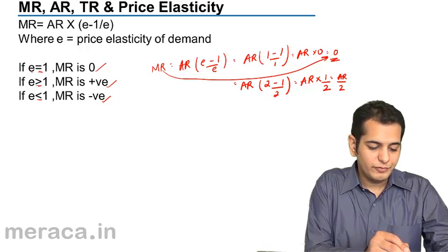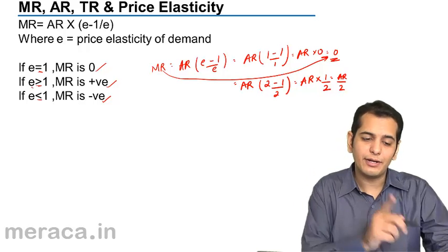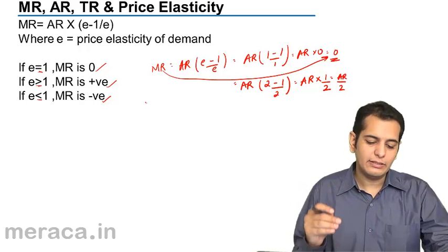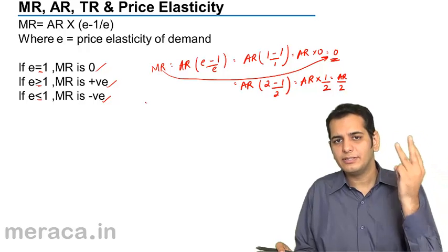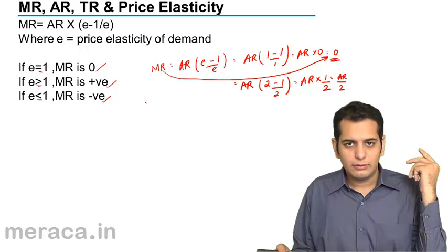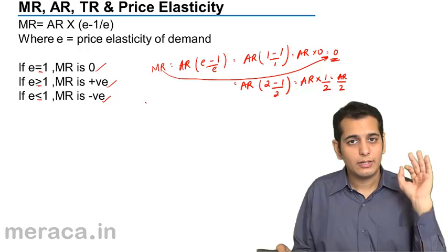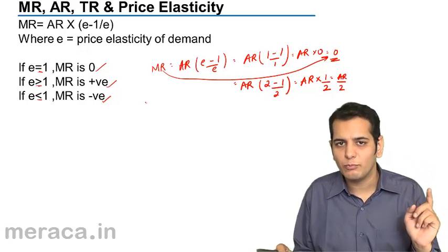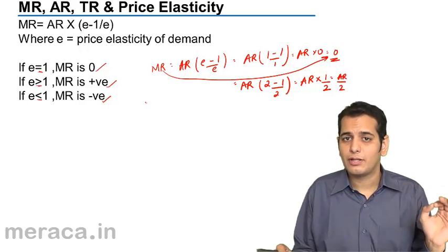We have seen that when E equals 1, MR is 0. When E is greater than 1, MR is always positive. When E is less than 1, MR is always negative. Please remember these three properties between AR and MR: MR is 0 when elasticity is 1, MR is positive when elasticity is more than 1, and MR is negative when elasticity is less than 1.